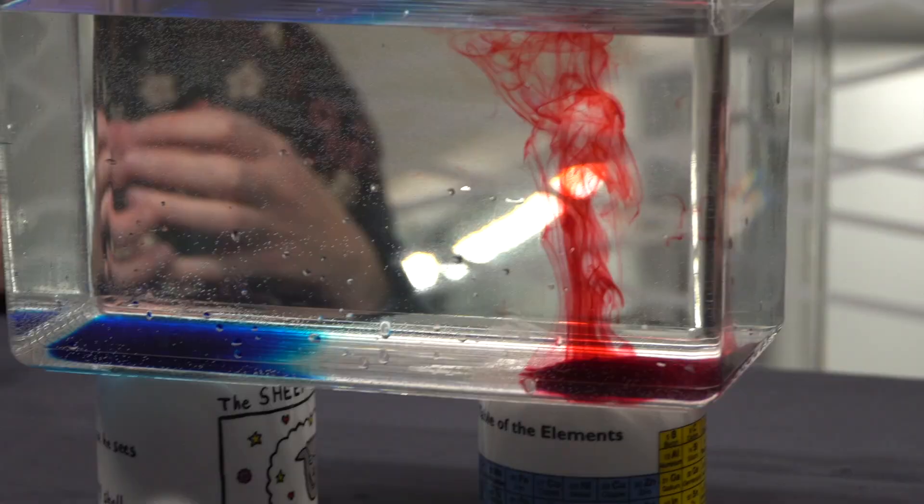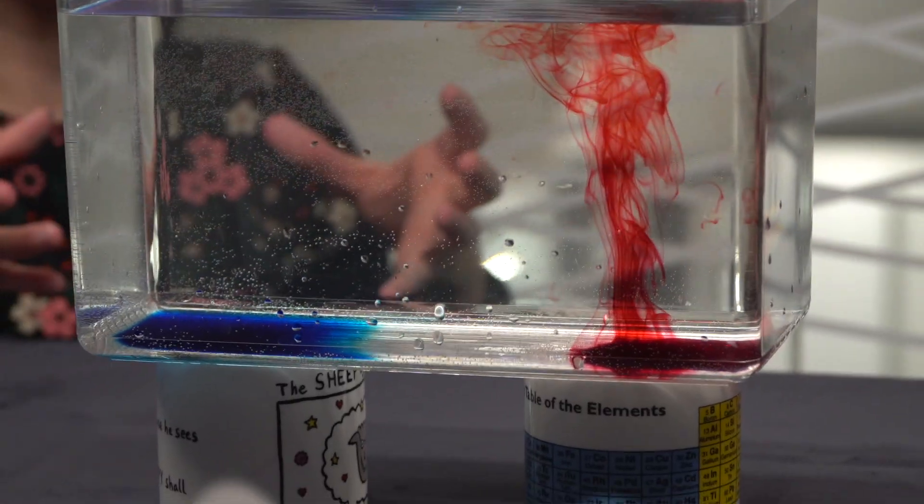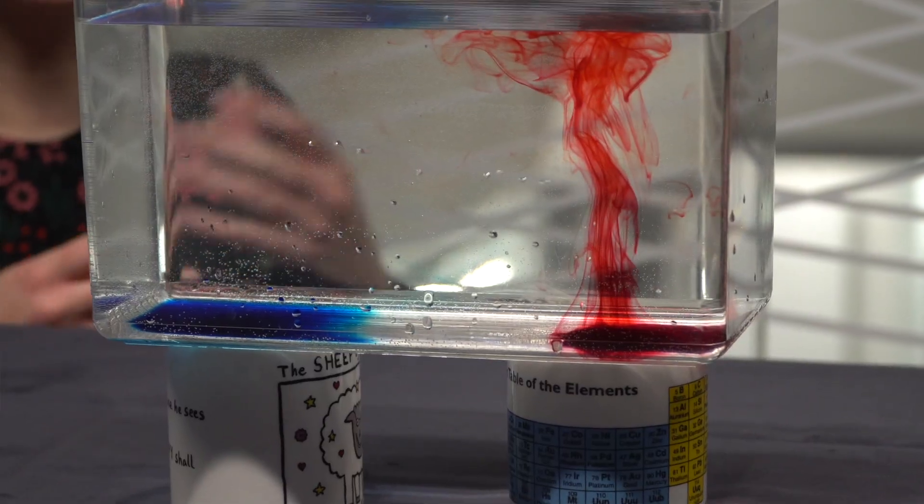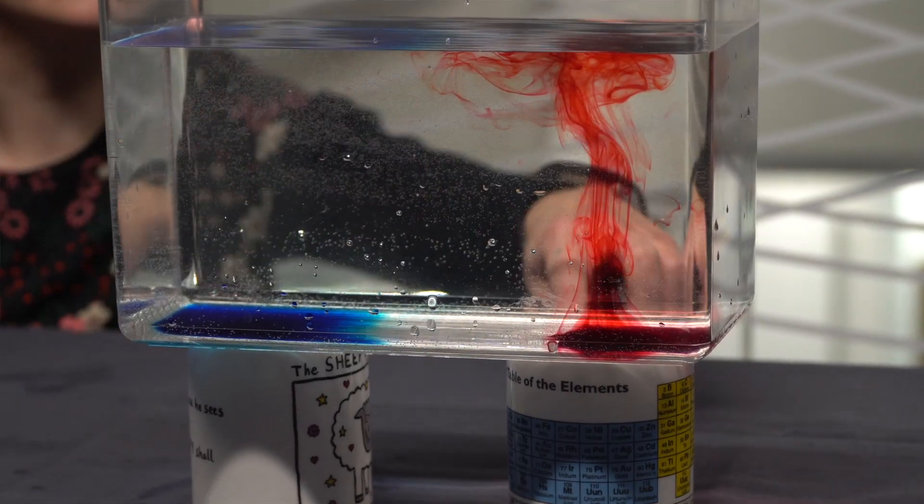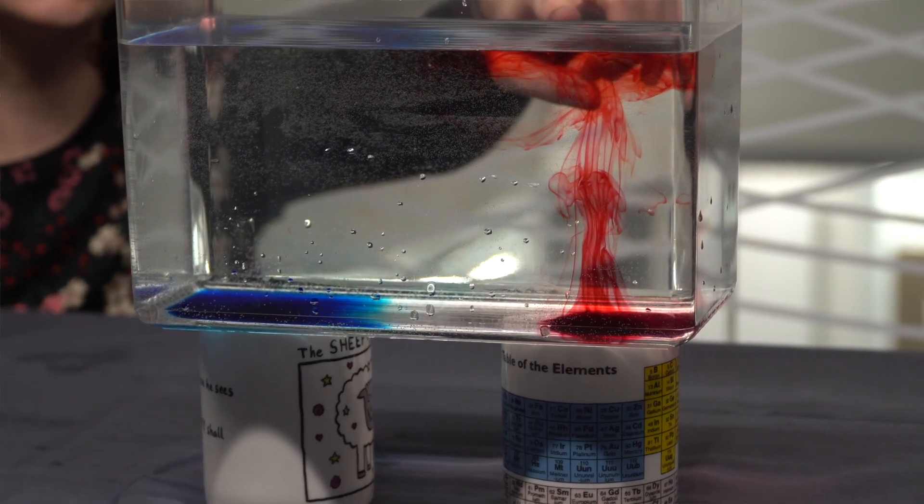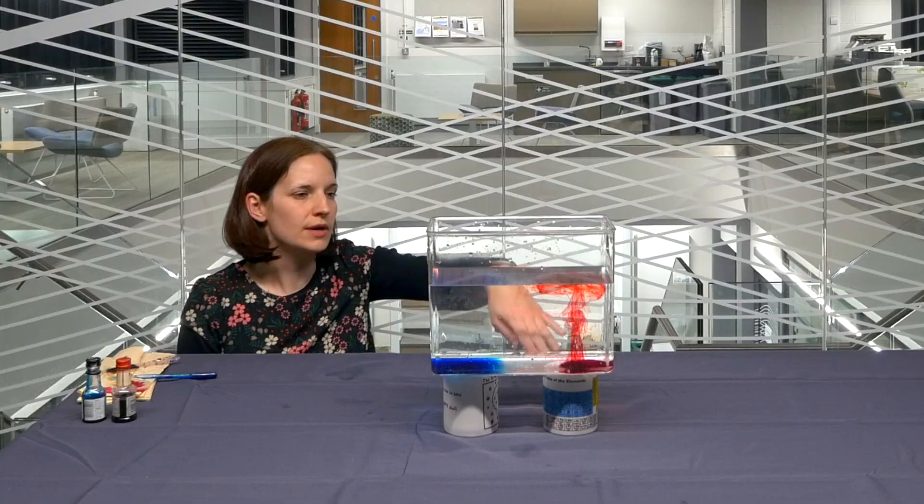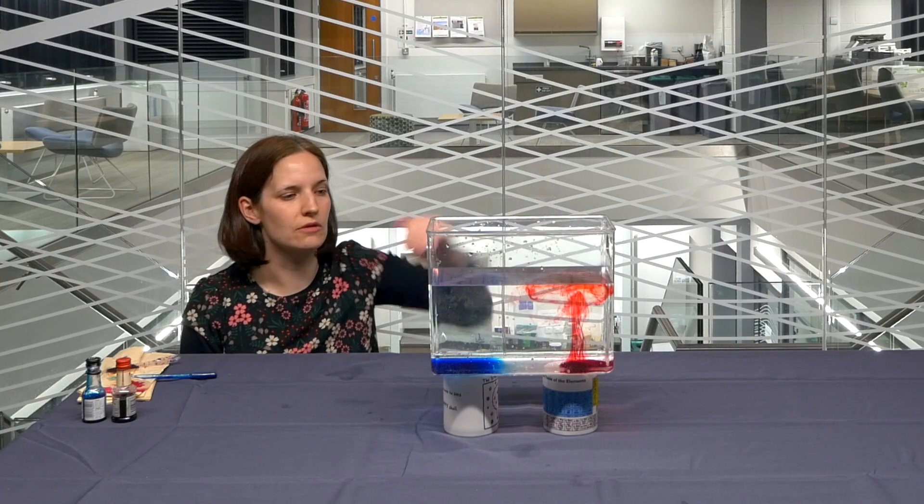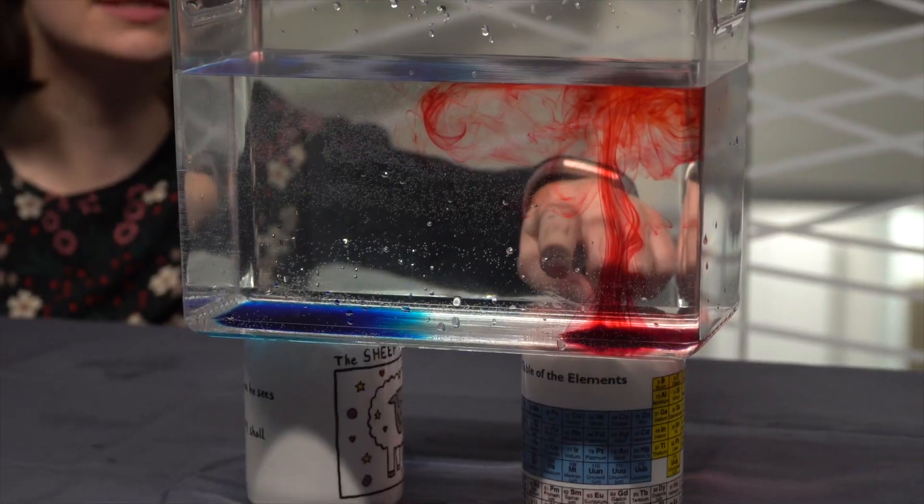That area of water becomes less dense as the molecules move apart. Now, less dense water wants to rise, in the same way that hot, less dense air wants to rise. So we can see this warm water moving upwards towards the top of the tank. When it gets to the top of the tank, it's got nowhere to go—it can't come out of the water—so it's moving along horizontally. This process is called convection.